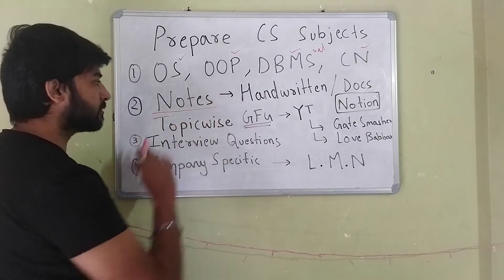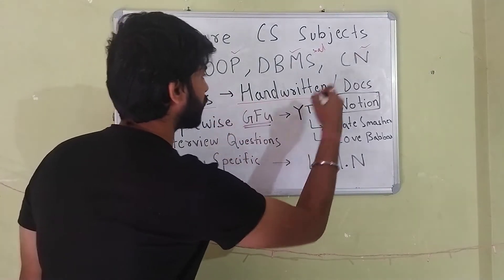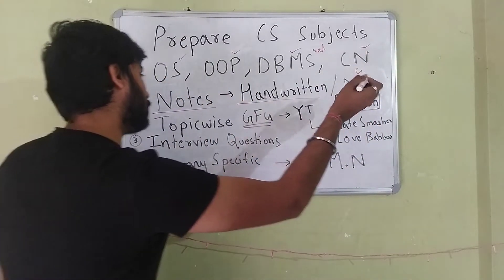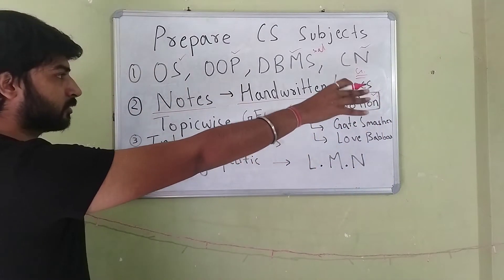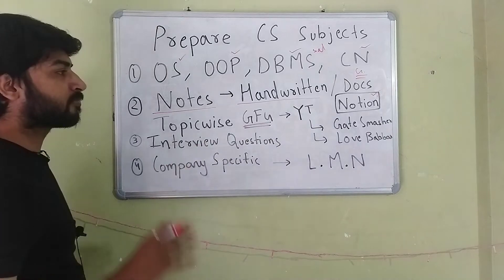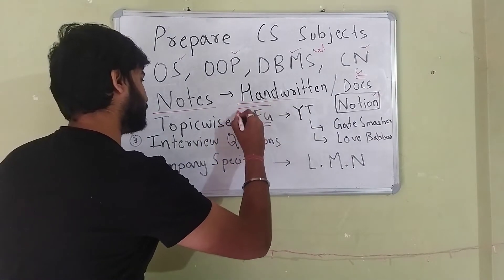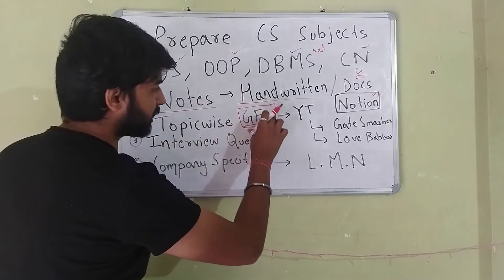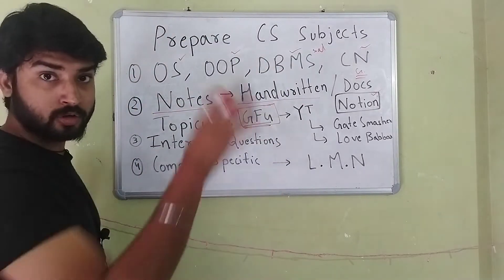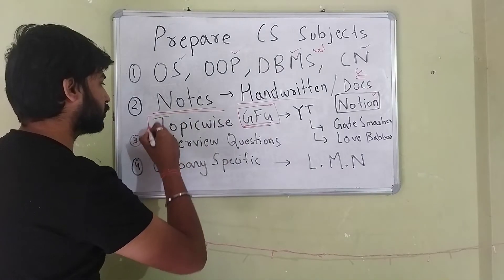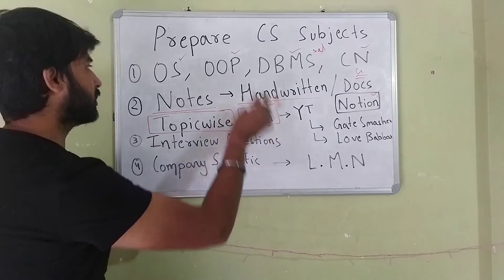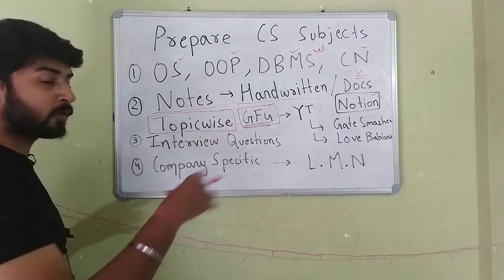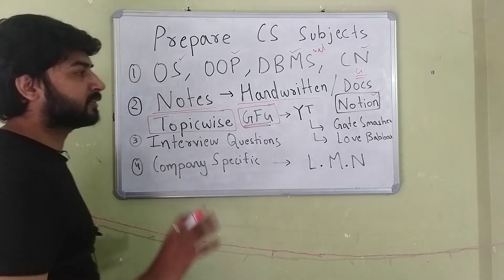I highly recommend making notes for this. You can make either handwritten notes or digital notes. For digital notes, I suggest Google Docs or Notion - Notion is a great website for making notes. To make notes, go on GeeksForGeeks, which has good material on all of these subjects. For example, if you're preparing notes for OS, search 'operating system' on GeeksForGeeks, find the topics, and make topic-wise notes.